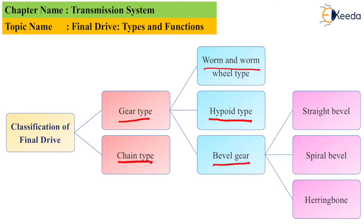The bevel gear is further classified into straight bevel, spiral bevel, and herringbone bevel — these are all three types of bevel gear. The detailed construction and working will be discussed individually in the next lecture. To summarize the classification: initially we classified the final drive into chain drive and gear drive; since chain drive was not suitable, we adopted the gear drive, which was further classified as described.